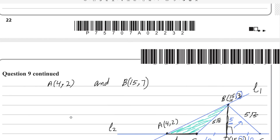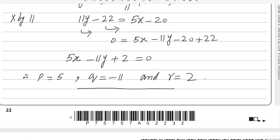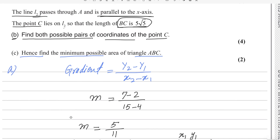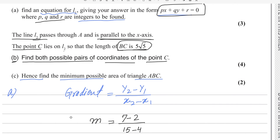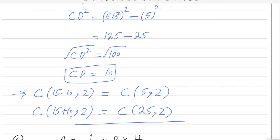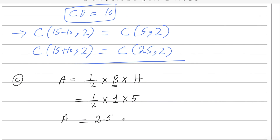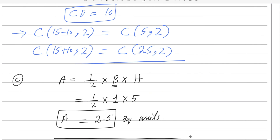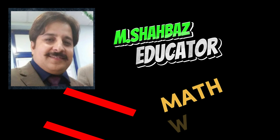Since no units are specified in the question, the area is written as 2.5 square units. This completes question number 9. If you have any questions or doubts, please write in the comment box. Thank you.